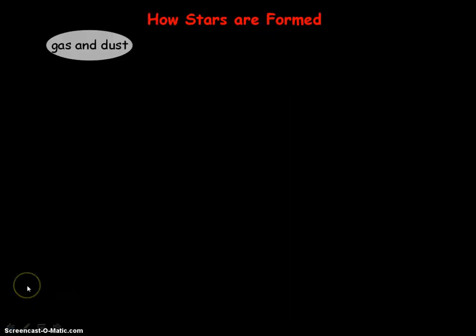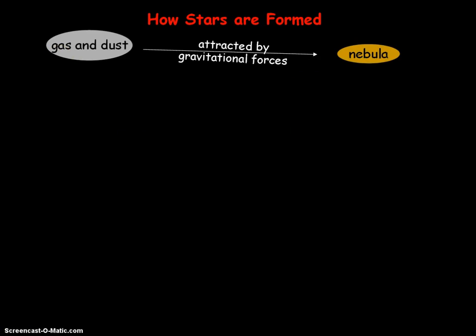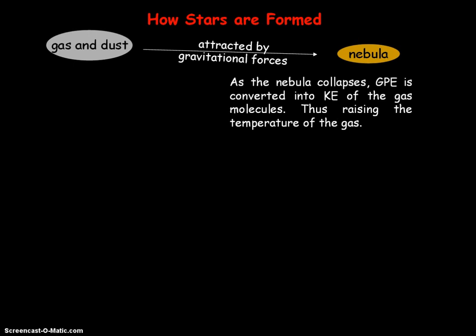All stars are formed when gas — mainly hydrogen — and dust are attracted together by gravitational forces to produce a cloud called a nebula. As more gas and dust collapse into the nebula, gravitational potential energy converts into kinetic energy for the gas molecules. Since temperature is directly proportional to mean kinetic energy, the temperature increases, forming a protostar — the beginnings of a star.